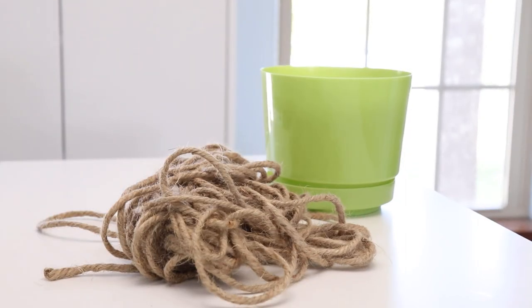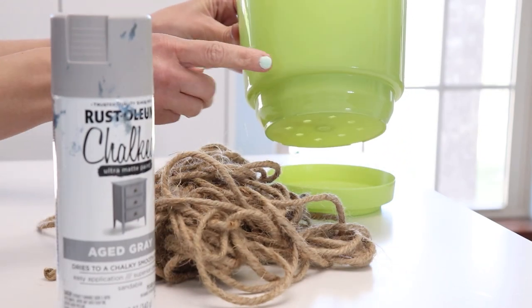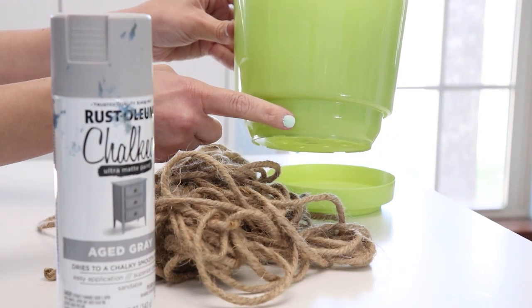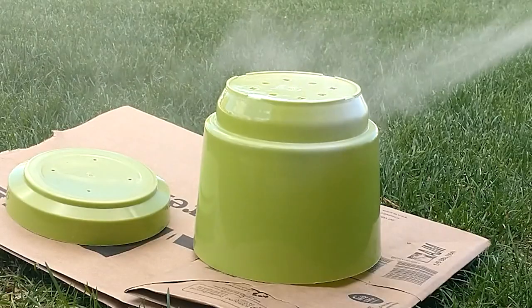For this first planter we are going to use some rope and some chalk paint. We're going to take it apart and add some spray paint to just the bottom part of the main planter, and then cover the full drainage tray with spray paint as well.